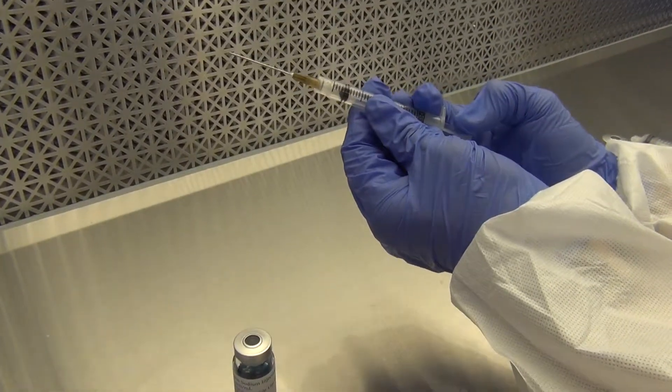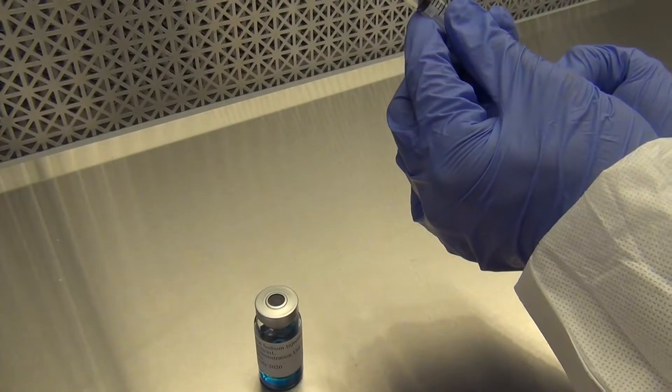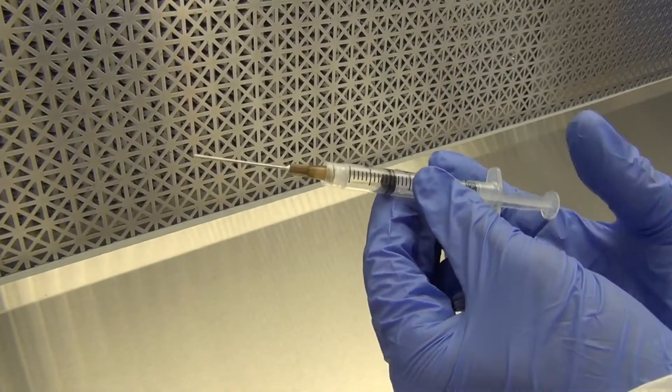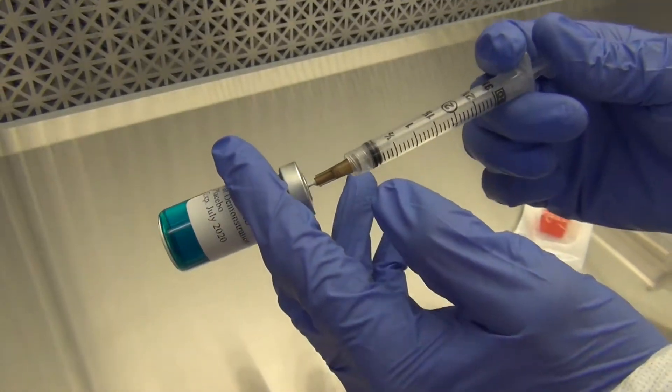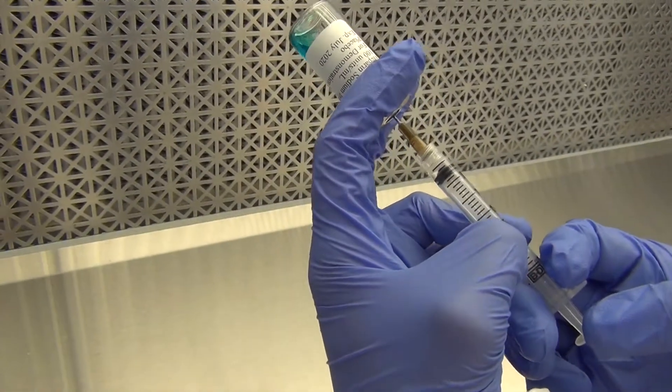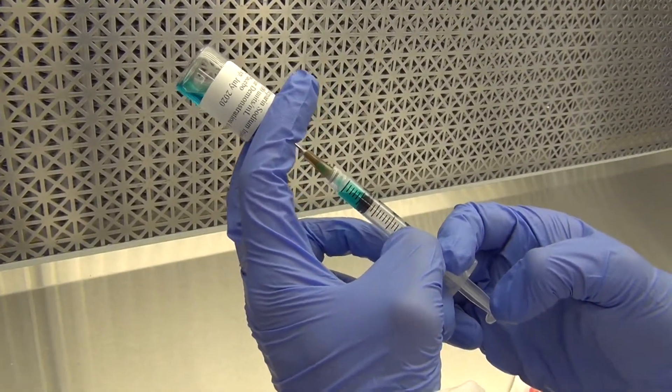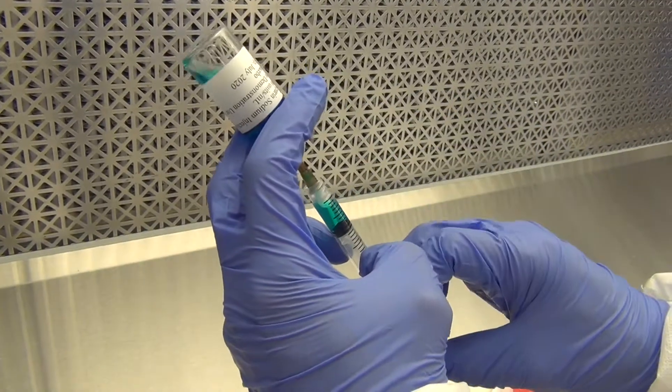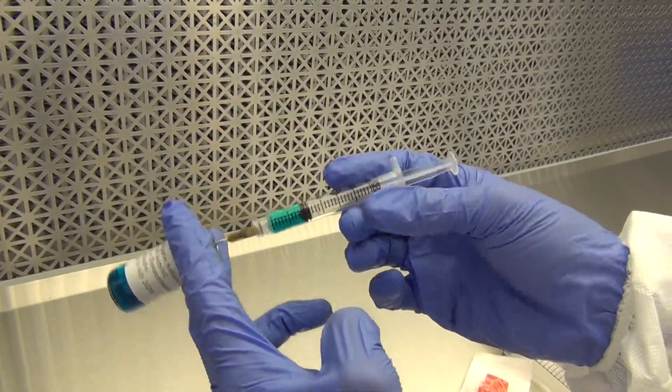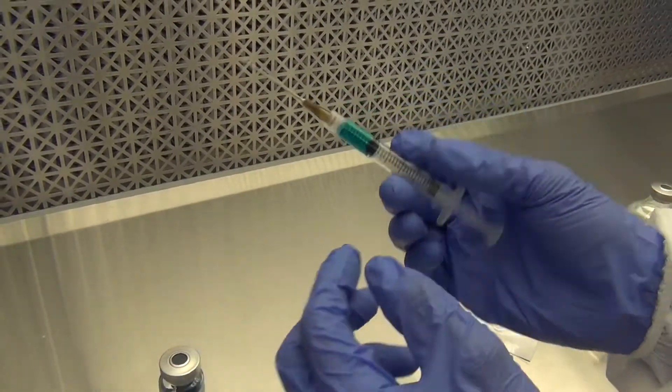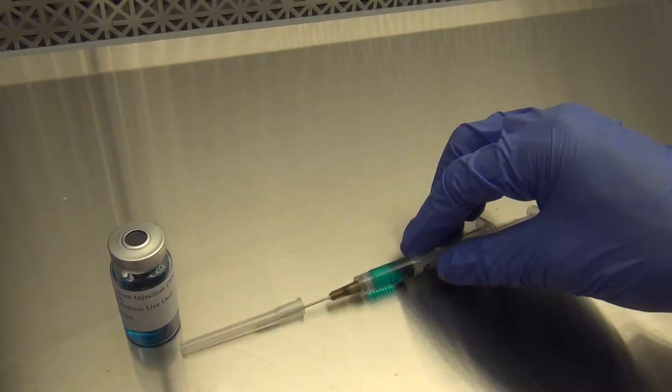Withdraw a volume of air equal to the amount of drug that you are going to draw up into the syringe. When you go into the vial to withdraw the drug, use the anti-coring technique. Go in at a 45 degree angle with the bevel up. Inject the air into the vial and withdraw the amount of drug you need. You can tap the syringe to get rid of any air bubbles.